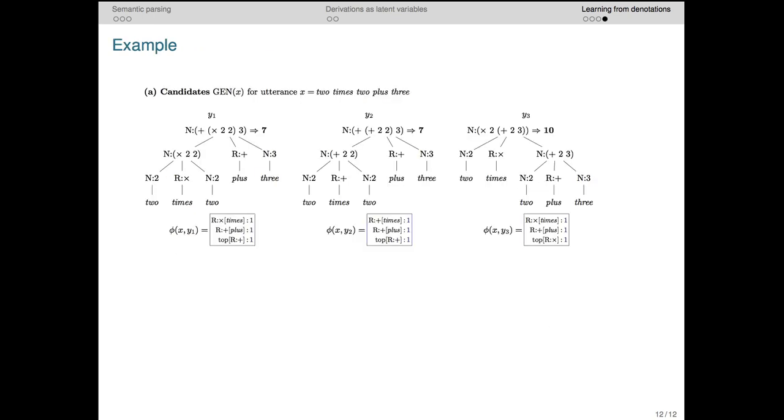To get a better sense for how this new problem is harder, let's return to our running example. The input and its associated trees are the same as before, as are the feature representations. So as a reminder, our input is x, 2 times 2 plus 3. The correct denotation is y1, and these two are distractors.